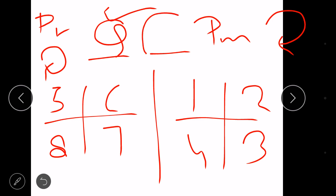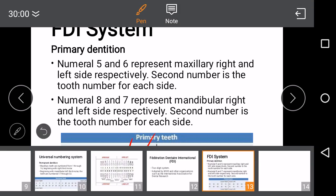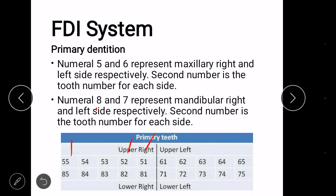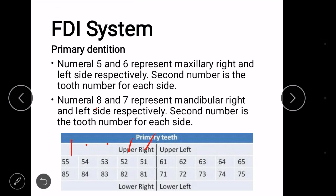Now the second digit. Second digit in primary dentition: one, two, three, four, five. These all represent different teeth where one stands for central incisor, two for lateral incisor, three for canine, four for first molar, and five for second molar.